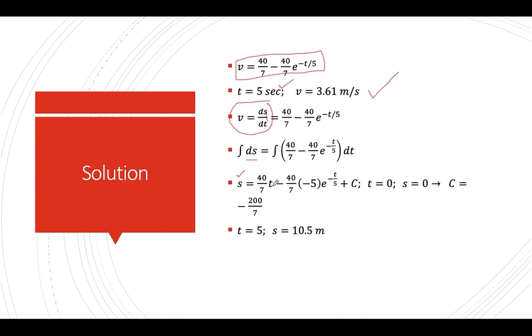So for 40 over 7t, and then negative 40 over 7, you have a correction factor of negative 5 here. Plus t. But when t is equal to 0, so everything here will be 0, and then s is equal to 0. You solve c to be negative 200 over 7.